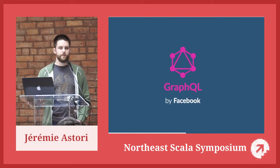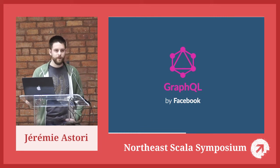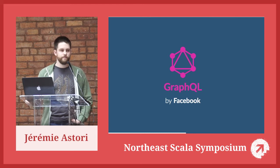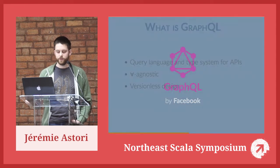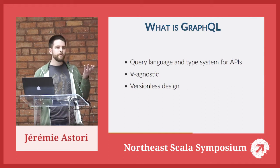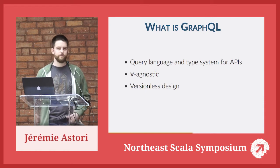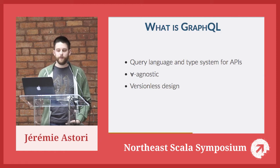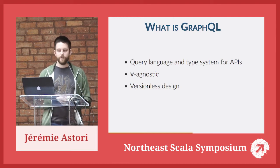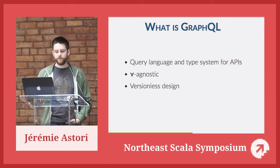GraphQL is made by Facebook. They started in 2012 internally and open sourced their specification in 2015. There are implementations in pretty much all popular languages. The reference implementation is in JavaScript, but the Scala one is much more powerful than even the reference implementation. At a very high level, GraphQL is a query language and a type system for your APIs. You describe your schema using GraphQL, and your clients make queries through that schema. It's back-end agnostic, transport agnostic, and format agnostic. Most people use it with HTTP and JSON, but you can use any format and transport you want. And because of its design, it encourages not versioning your APIs — and that's a killer feature.